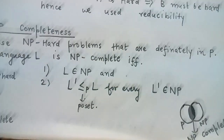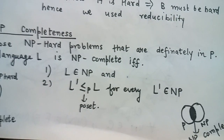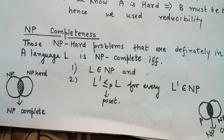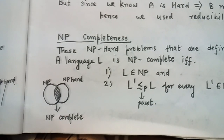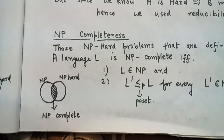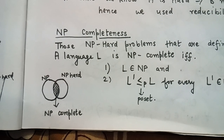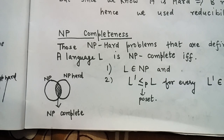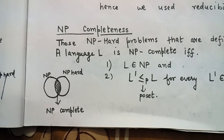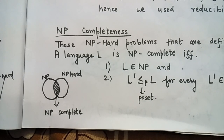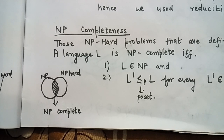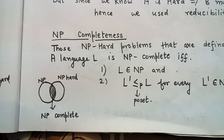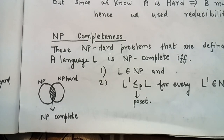So, an NP-complete problem is a problem that has to be in NP, and it is also verifiable in polynomial time.